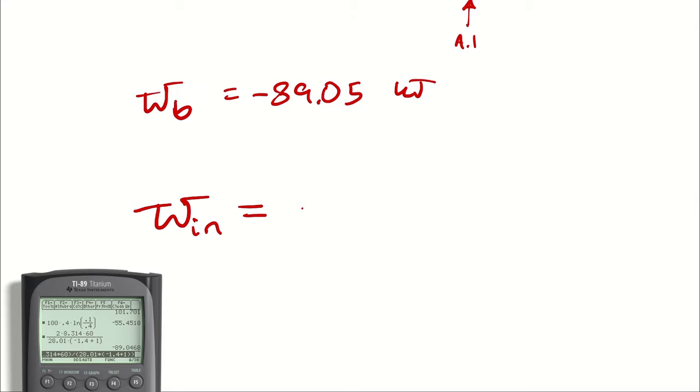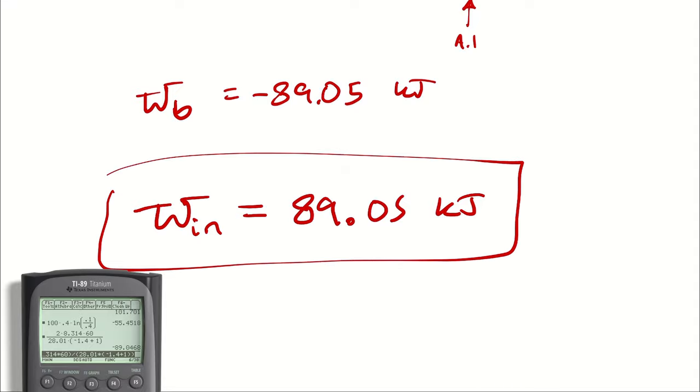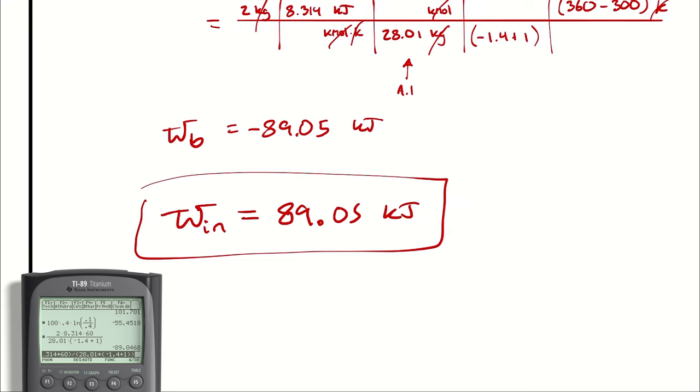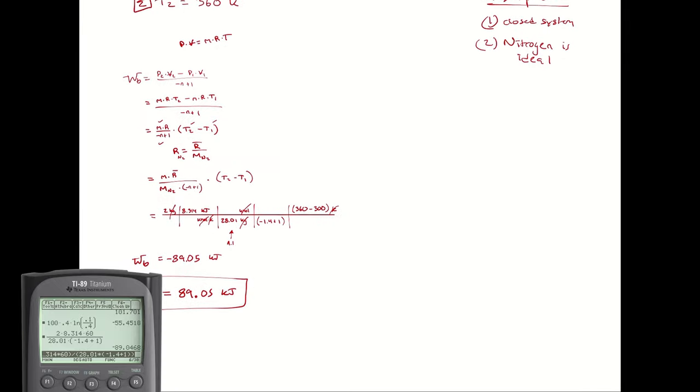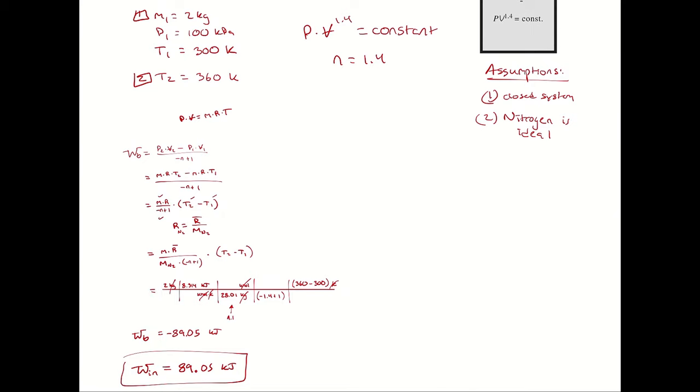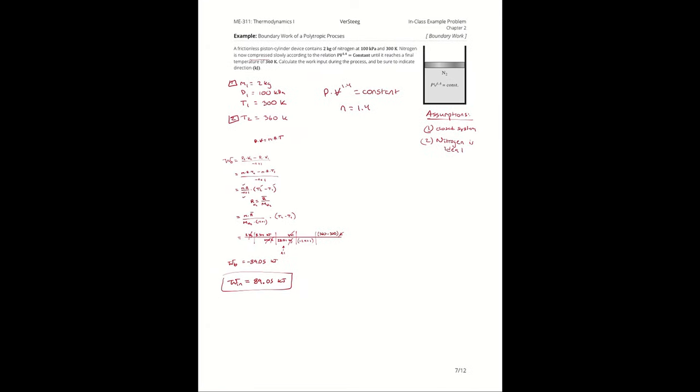So this would be a work in of positive 89.05, because remember, when you switch the sign, you are flipping the positive to a negative, or vice versa, and boundary work is always out. That's what the negative, therefore, input means. Note, I would also accept this in the form of work is equal to 89.05 kilojoules in the inward direction.